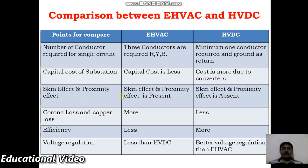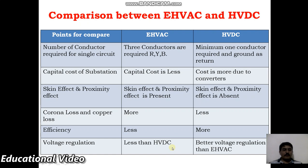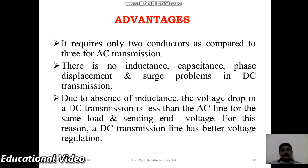Skin effect and proximity effect are present in EHVAC but absent in HVDC. Corona loss and copper loss are more in EHVAC compared to HVDC. Efficiency is less in EHVAC compared to HVDC, while HVDC has more efficiency. Voltage regulation is somewhat poor in EHVAC but is better in HVDC systems.